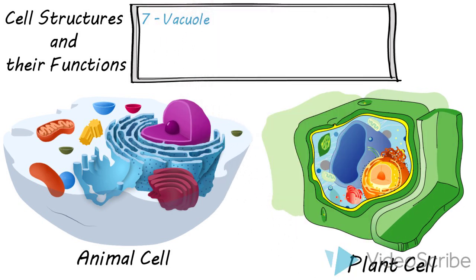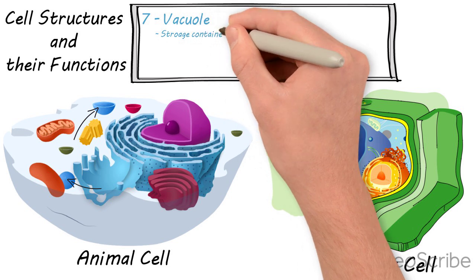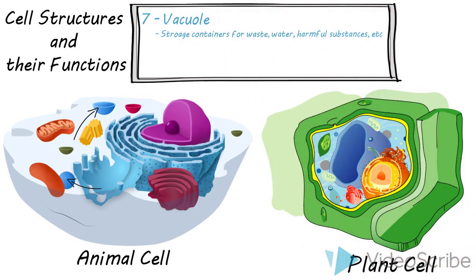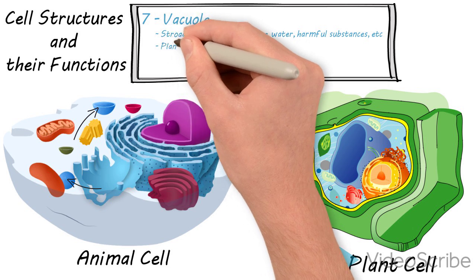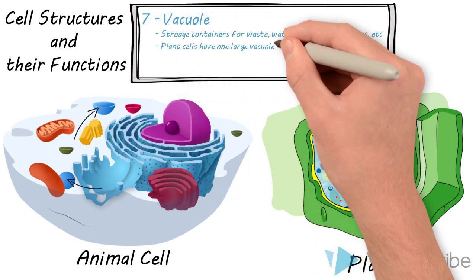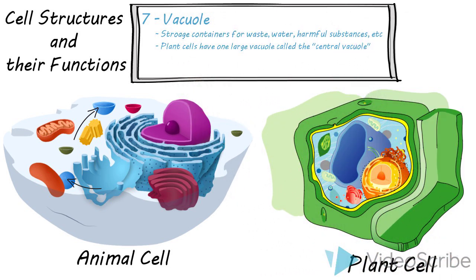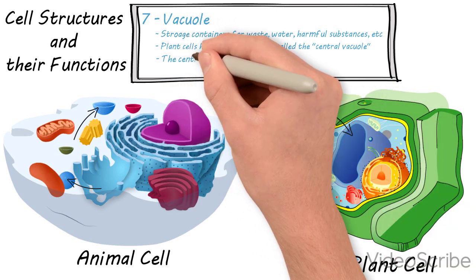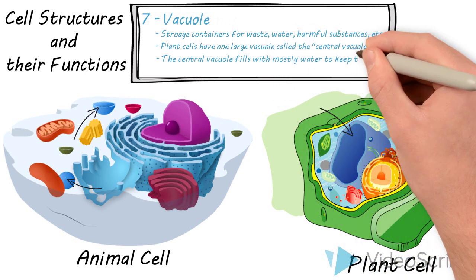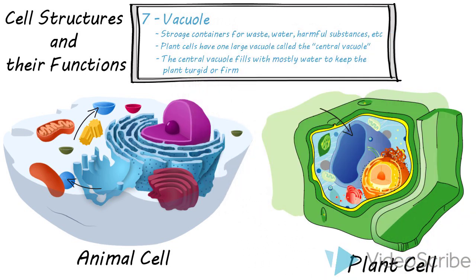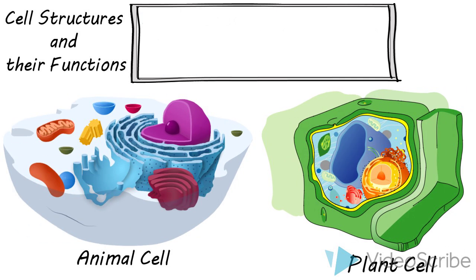Vacuoles are storage containers. You see them here. They store things like water, waste, harmful substances, and lots of other stuff. In the plant cell particularly we have one large vacuole called the central vacuole. That central vacuole is filled with mostly water and it helps to keep the plant turgid or firm. If a plant's going limp it's because that central vacuole isn't full.